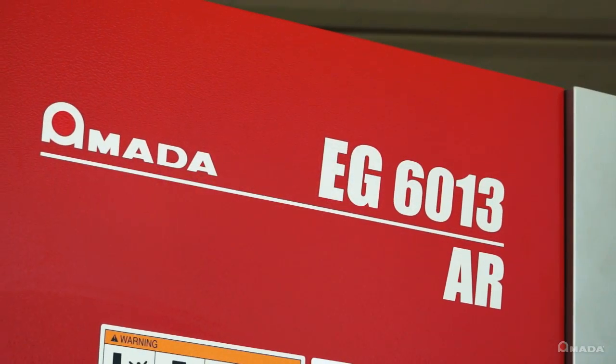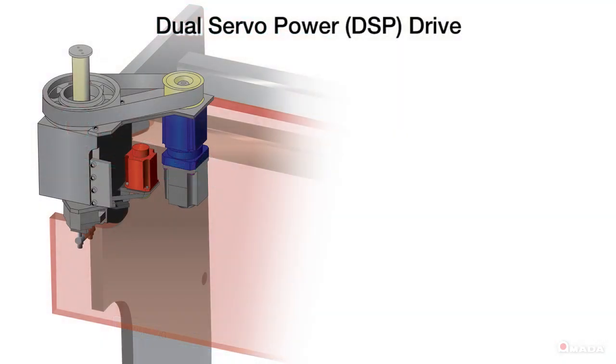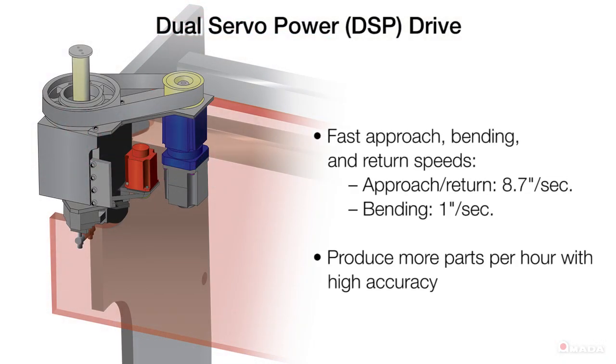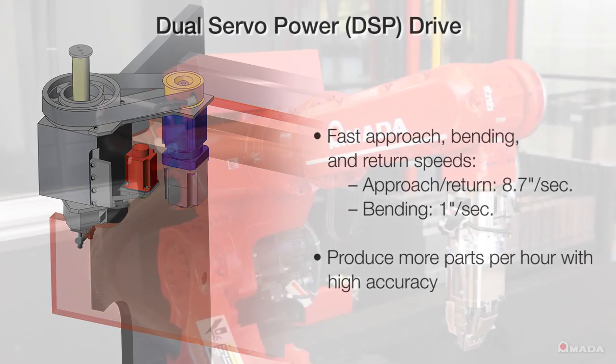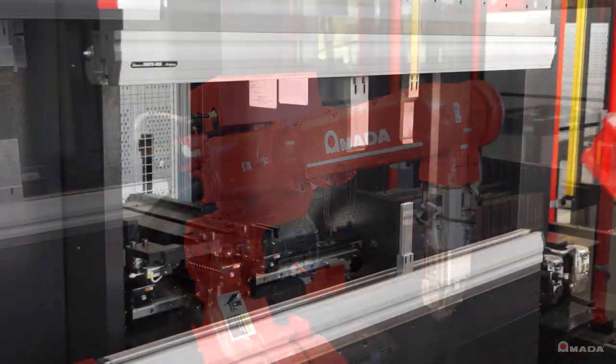The EGAR utilizes the world's first dual servo electric drive. It delivers fast approach, bending, and return speeds that provide faster cycle times and more parts per hour with exceptional accuracy.